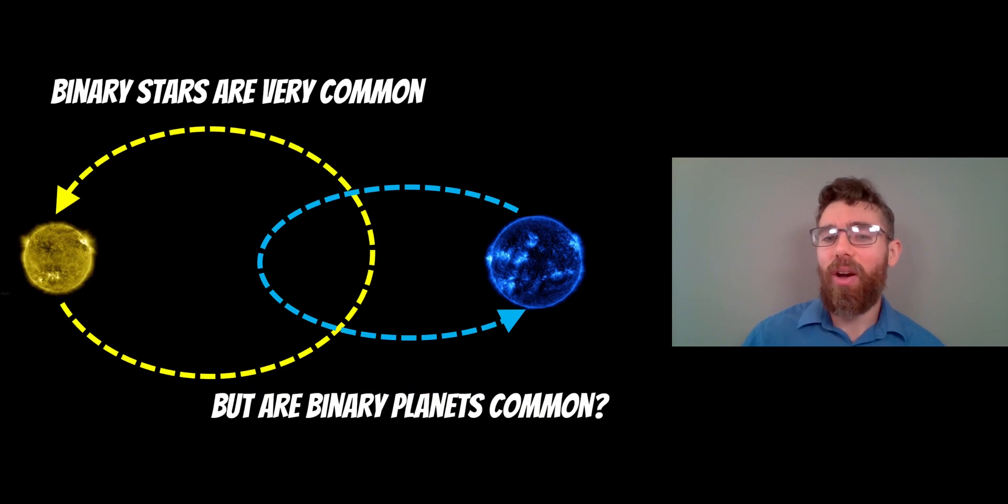Binary stars are also very common. This is where you've got two stars orbiting a common centre of mass. That centre of mass is invisible and you can't see it, but you can infer where it is from their orbits. There's lots of binary stars. There's actually lots of planets orbiting binary star systems. You can get more stars in a system - triple stars, four, five stars in a system. They get rarer and more unstable the more stars you add in. But binary stars, two stars orbiting their common centre of mass, is actually very common.